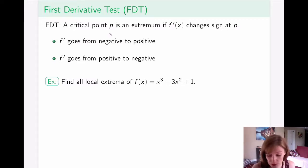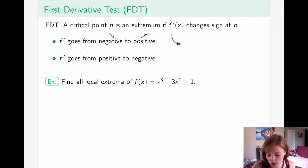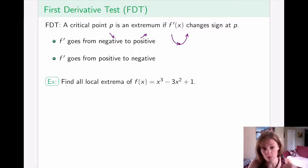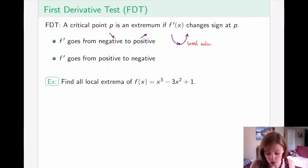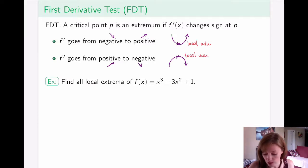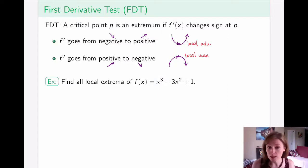In the first case, the derivative goes from negative (function is decreasing) to positive (function is increasing), which means we've acquired a local minimum. In the second case, the derivative goes from positive (function is increasing) to negative (function is decreasing), and the point turns out to be a local maximum. Be very careful: just because a point is a critical point, it doesn't mean it's going to be a local maximum or minimum — it could be neither. For example, an asymptote where the derivative doesn't exist does not make it a local maximum or minimum.